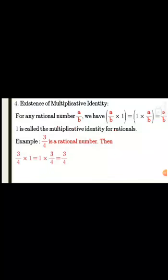Looking at the example, in both cases LHS equals RHS, satisfying the associative property. Next is the existence of multiplicative identity. For any rational number a upon b, we have 1 as the multiplicative identity, meaning when you multiply any rational number by 1 you get the number itself. For example, 3 by 4 multiplied by 1 gives 3 by 4.